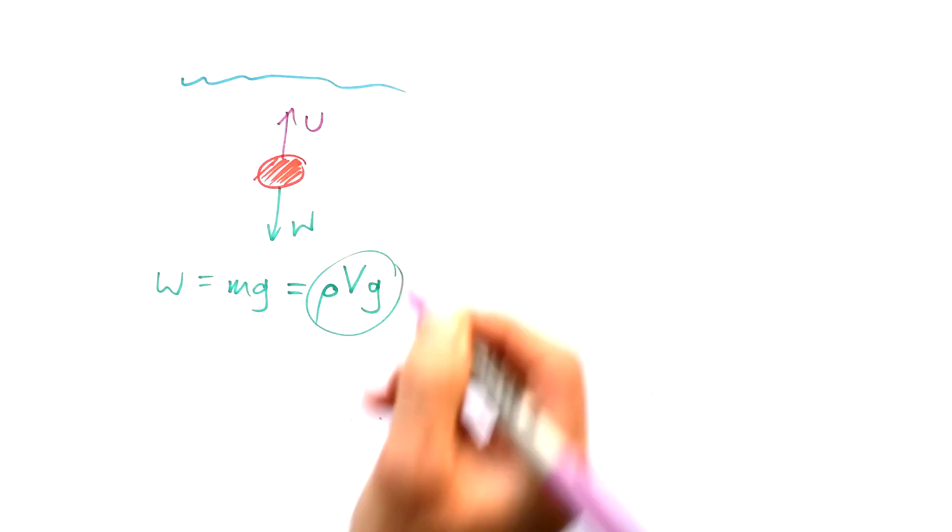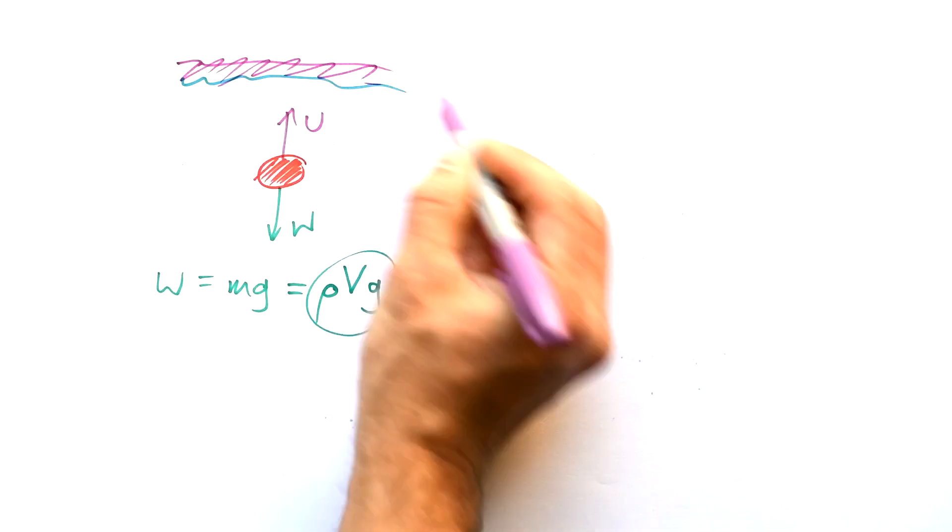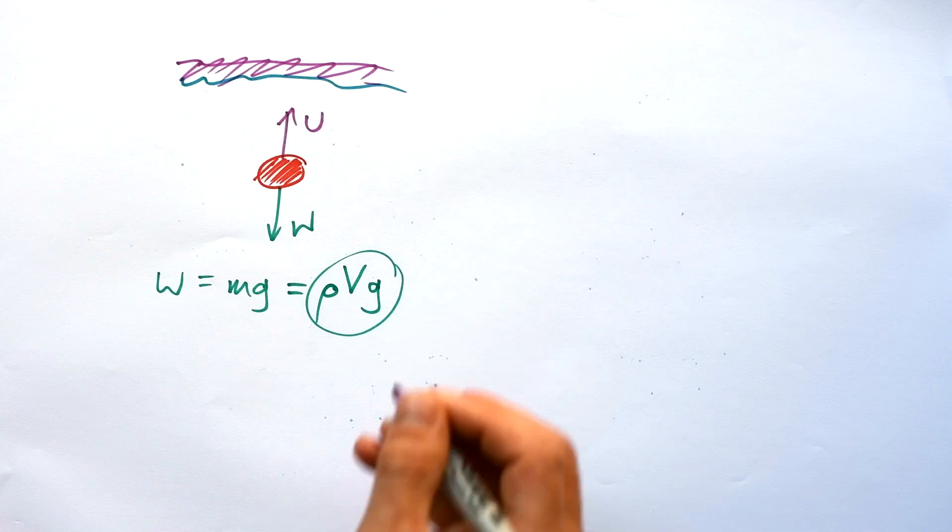But we have upthrust as well. What did we say upthrust was a result of? Well, it's a result of the weight of water that's being displaced. So, ultimately, upthrust is a weight as well. But it's the weight of water. So, again, we can say this equal to ρVg.